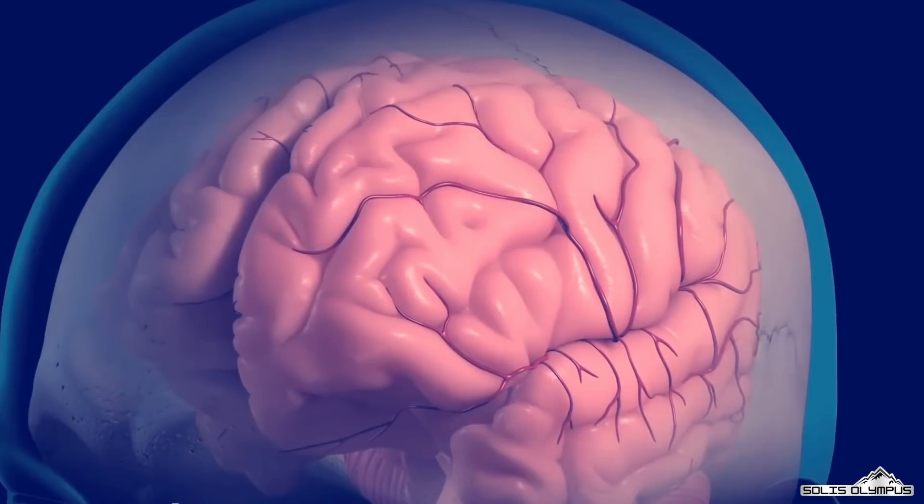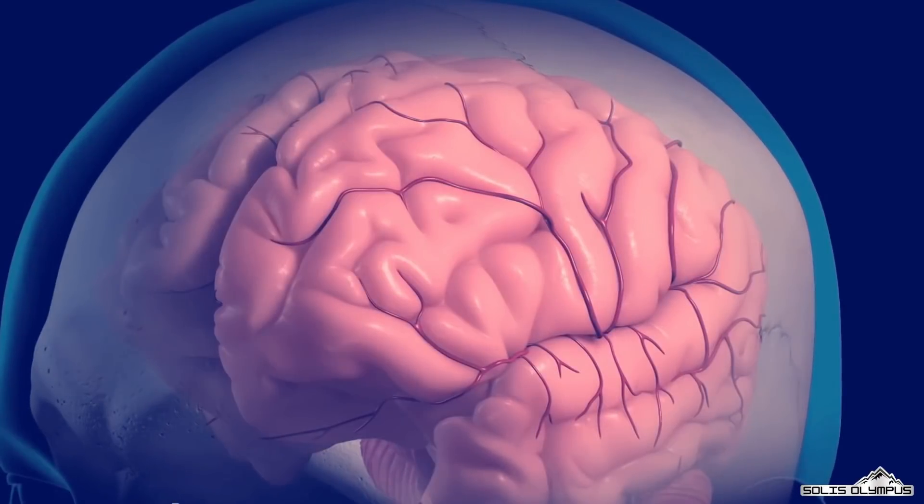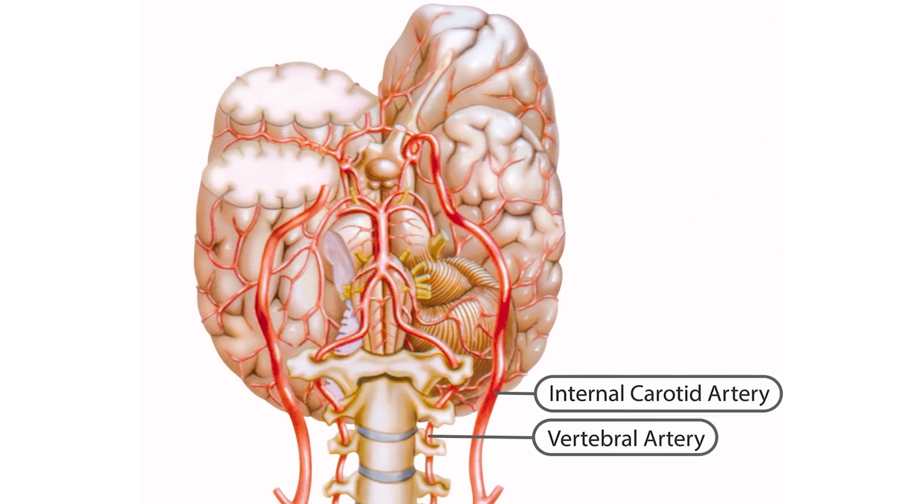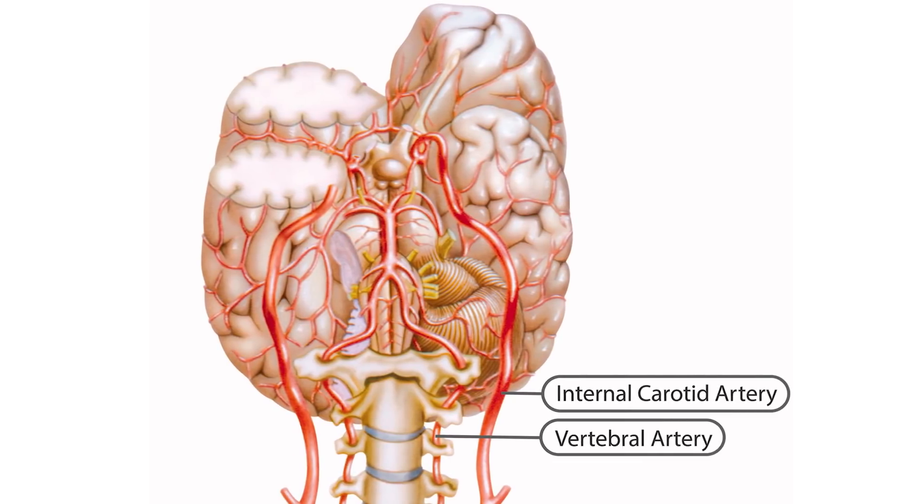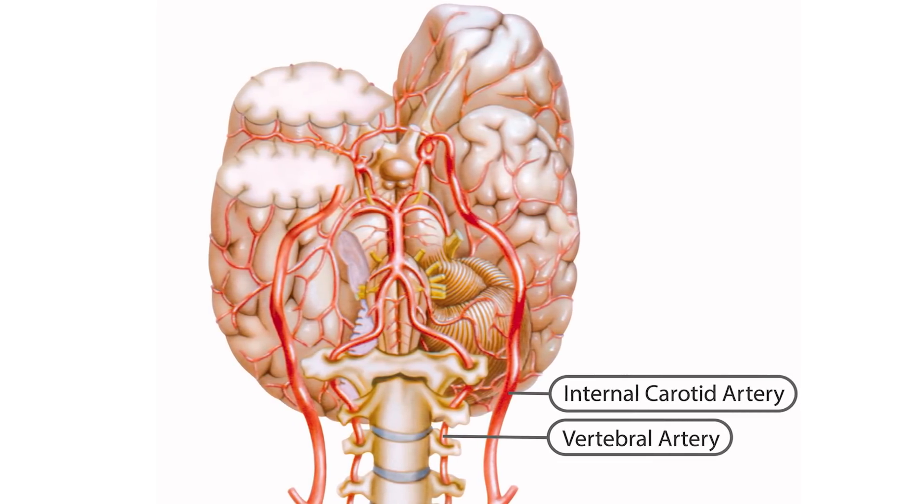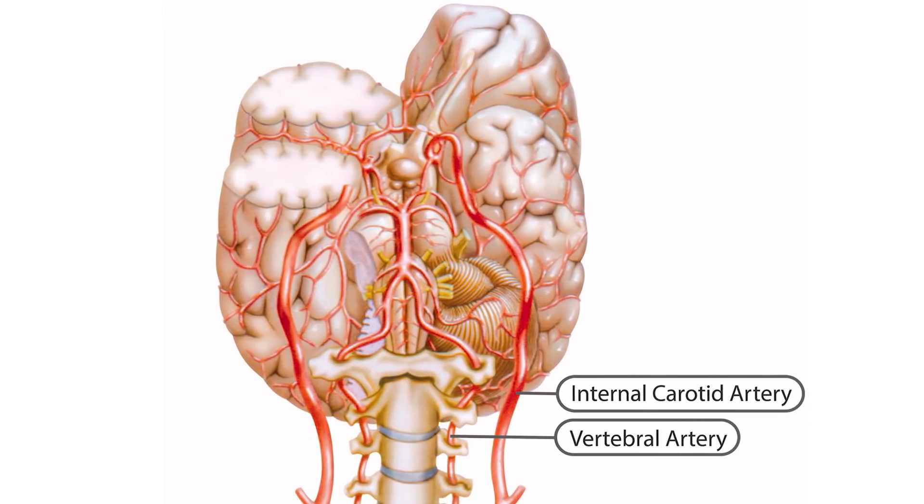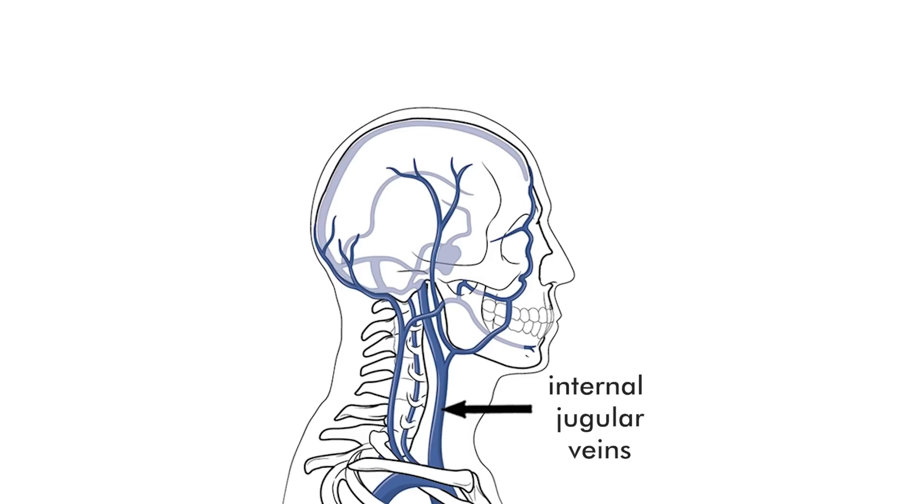At the end, let us see how the blood is supplied to the brain for proper functioning. Two sets of blood vessels supply blood and oxygen to the brain: the vertebral arteries and the internal carotid arteries, while the internal jugular veins are considered to be the main pathways of carrying blood away from brain to the heart. Thank you.